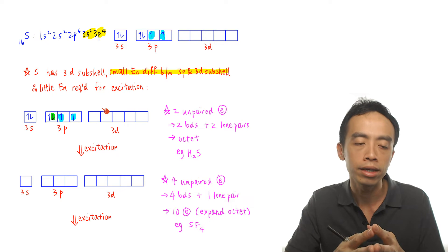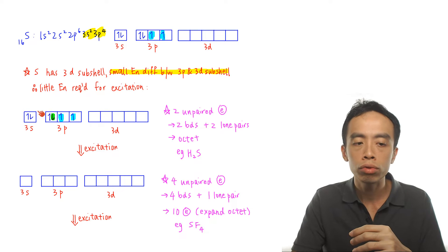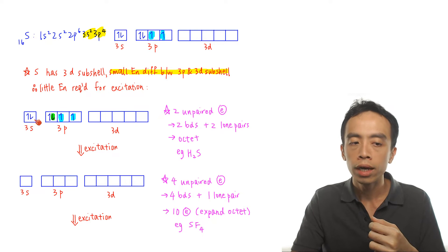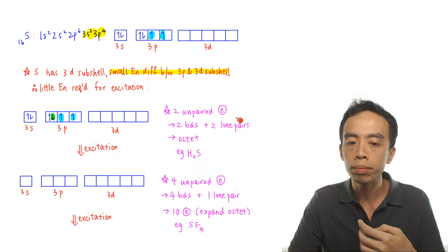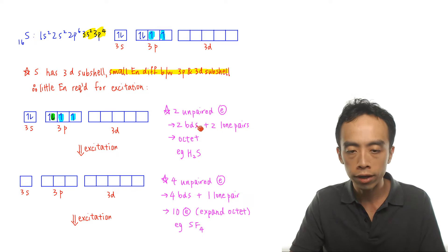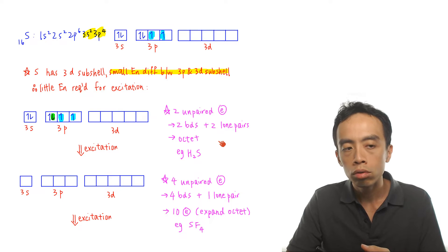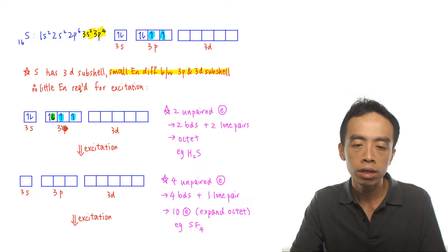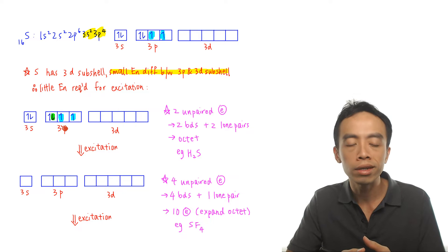Without excitation, sulfur has the configuration 3s², 3p⁴, giving 2 unpaired electrons and 2 electron pairs. So it can form 2 covalent bonds and 2 lone pairs — just like oxygen in water. We have the example H₂S, which is very similar to H₂O. So if sulfur just uses its ground state configuration to form bonds, we would expect sulfur to be octet, just like oxygen. But sulfur can actually do more.